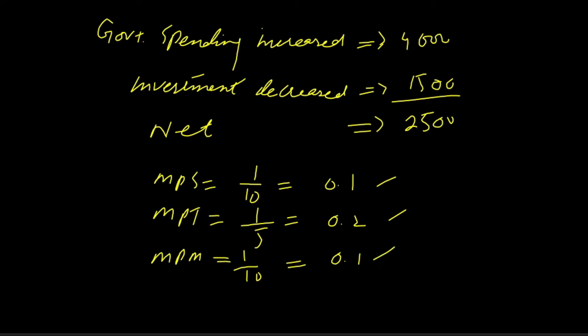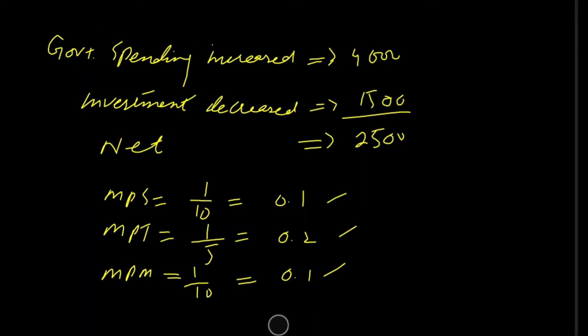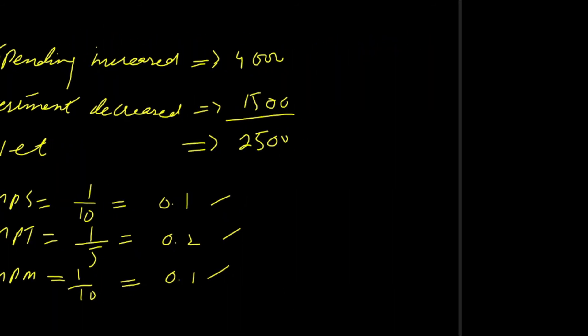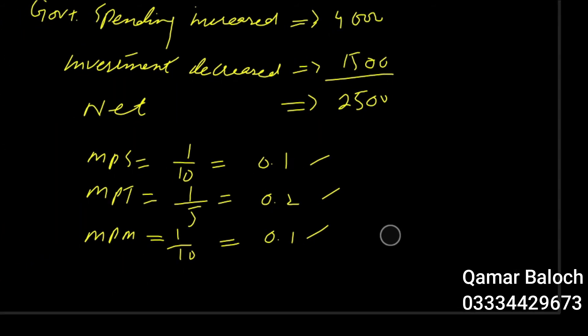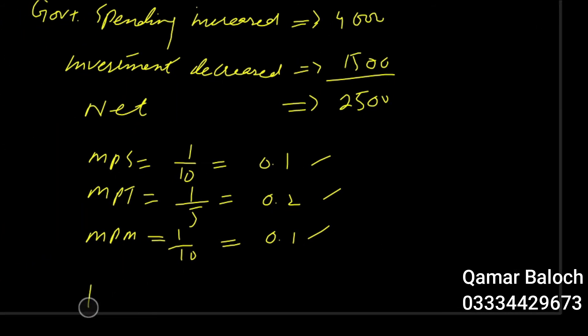Marginal propensity to import was one over ten, that is 0.1. So what you have to do is basically find out how much national income will increase. First of all, find out the value of multiplier.